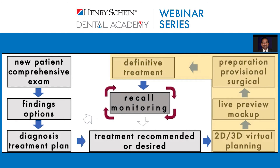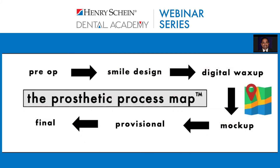Going back to our process map, when treatment is recommended or desired, we always move to a phase of two-dimensional and three-dimensional virtual planning. After that virtual planning, we always try to do some kind of live preview or mock-up to test whether our planning was effective. After the live preview, we move to the treatment phase — prepare, provisionalize, and if there's surgery, that ultimately leads to definitive treatment. The prosthetic process map is the same every time: smile design, digital wax-up, mock-up, provisional, final.